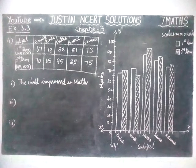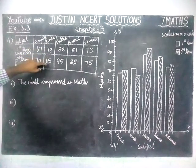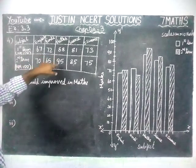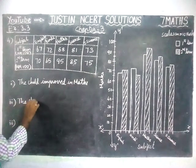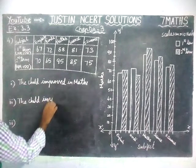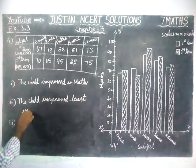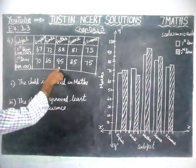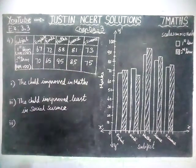Second question: in which subject is the improvement the least? Hindi subject went down, so we don't count that. The differences are: maths 7, English 3, science 4, and social science only 2 marks. So the child improved the least in social science subject.